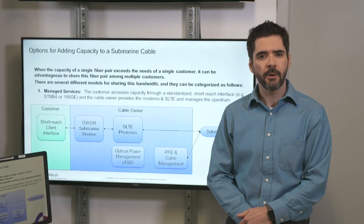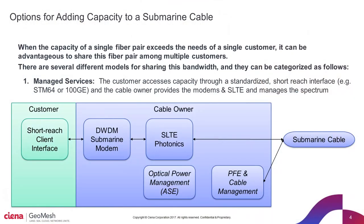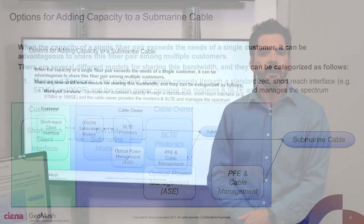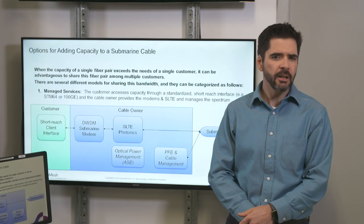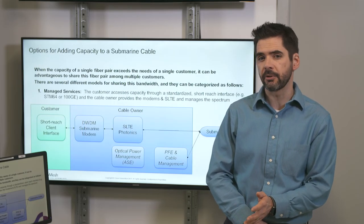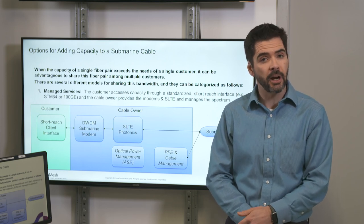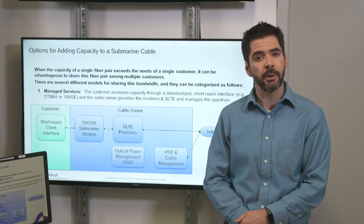The first option is managed services. Here, the customer accesses capacity through a standardized short-reach interface, while the cable owner provides all the modems, photonics, and cable management. As a customer, this is the simplest option if you are not familiar with submarine systems, or if you simply need a small fraction of the fiber pair capacity.